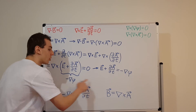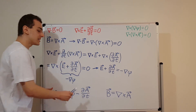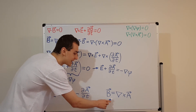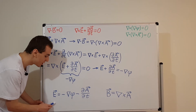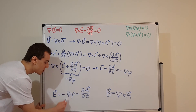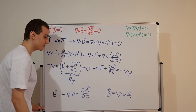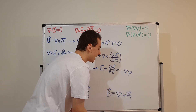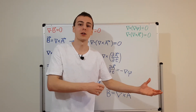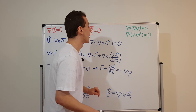These expressions are each implicitly three equations — one for each x, y, and z component. For the electric field, the x-component involves an x-derivative of φ and the time derivative of the x-component of A. For the magnetic field, the curl involves a mixture of derivatives across all components, as shown explicitly in the previous video on vector identities.